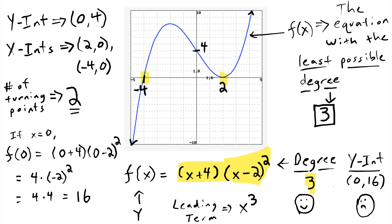So our y-intercept is no longer going to be 16. With our new function, f(0) equals a times (0 plus 4) times (0 minus 2) squared. All we need to do now is solve for a. I'm going to set up an equation reminding myself that I want f(0) to equal four. Plugging in four for f(0) and solving, a is going to be one over four. Now that we know a equals one-fourth, we can plug that back into our function: f(x) equals one-fourth times (x plus 4) times (x minus 2) squared.